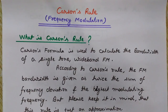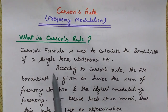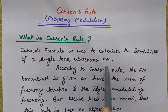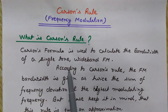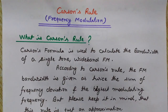The information is contained in the frequency variations of the carrier wave. Now let's see Carson's Rule. Carson's formula is used to calculate the bandwidth of a single-tone wideband FM. Single tone means a signal containing only a single frequency — it is not containing a number of frequencies. According to Carson's rule, the FM bandwidth is given as two times the sum of frequency deviation and the highest modulating frequency.